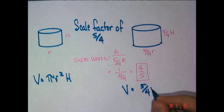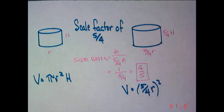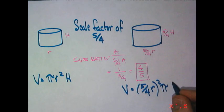make sure you get squared, times pi, multiplied by times 5 fourths of h.